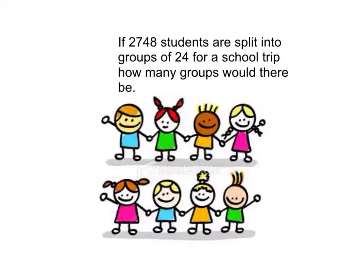If 2,748 students are split into groups of 24 for a school trip, how many groups would there be?